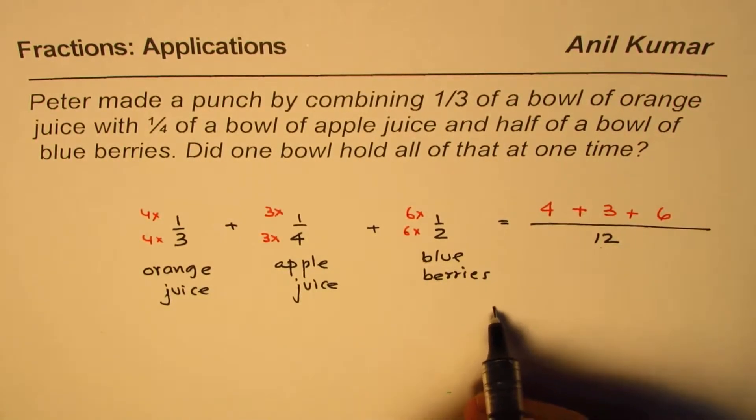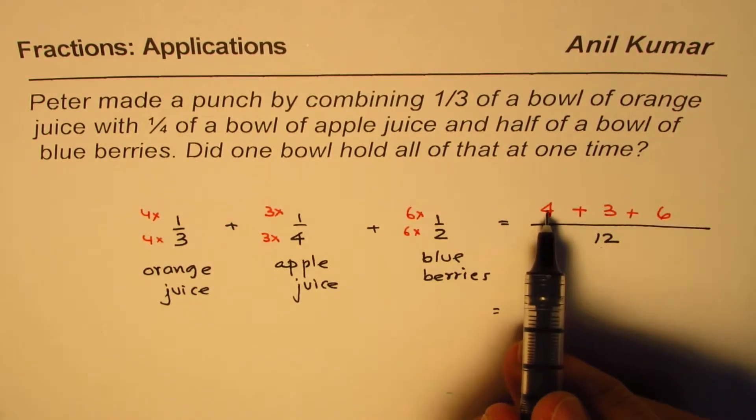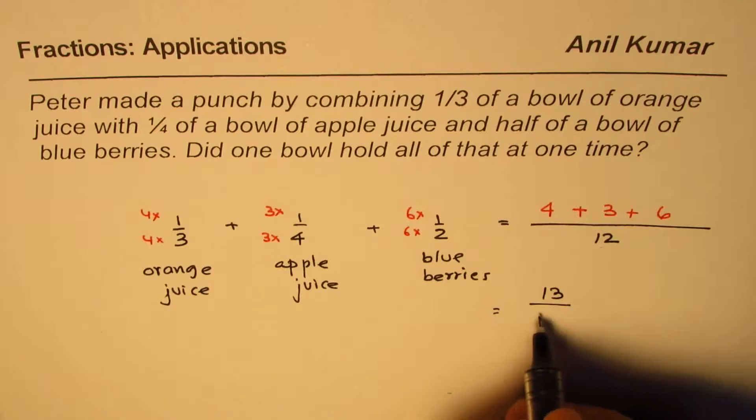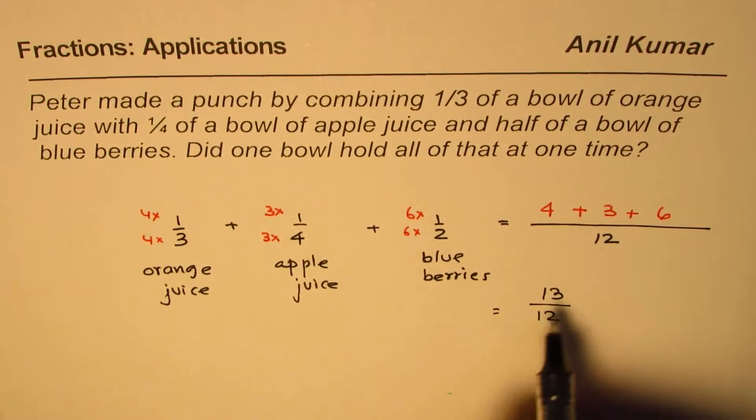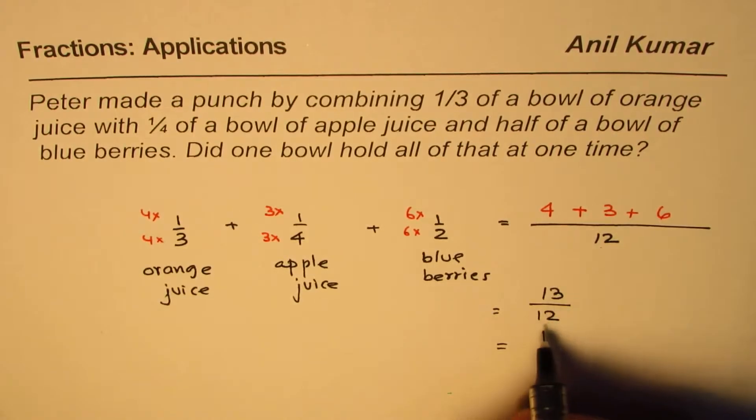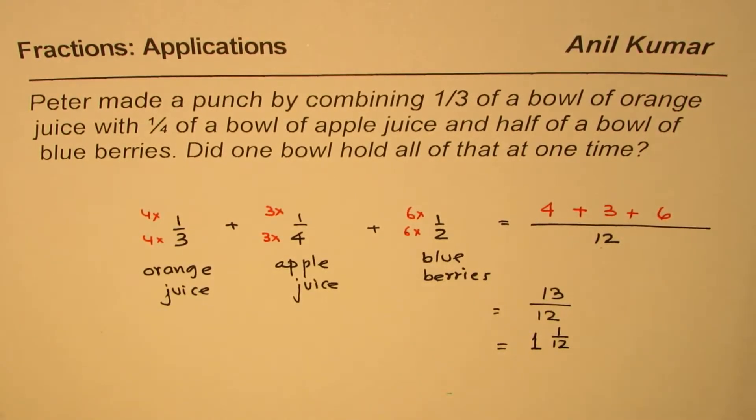Adding them, what do we get? Six plus 3 is 9, 9 plus 4 is 13. So we get 13 over 12. This is indeed more than 12.